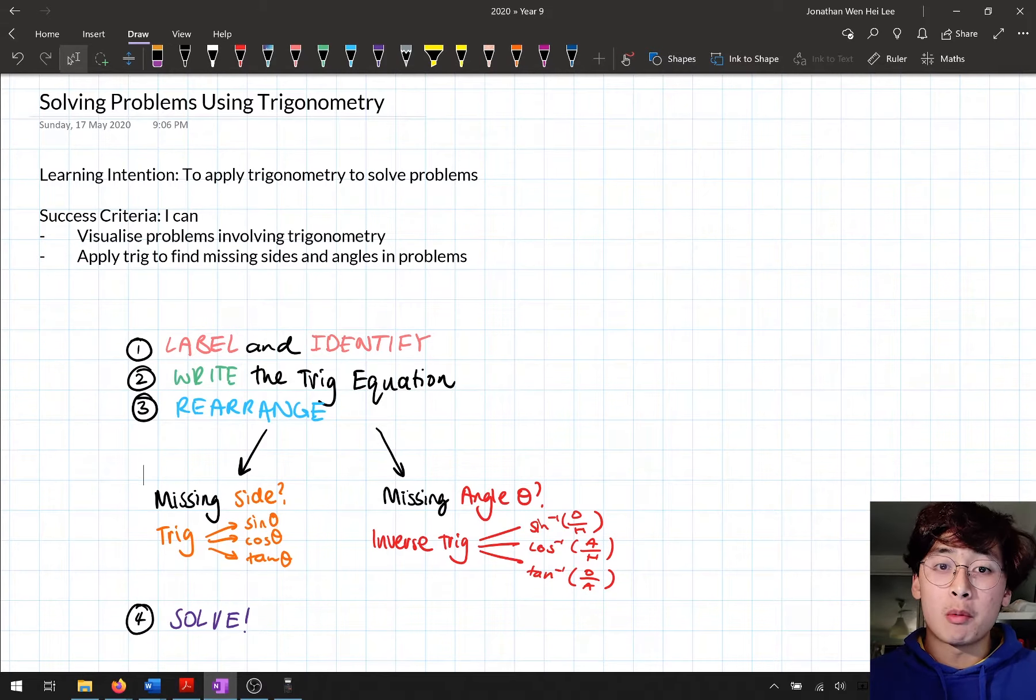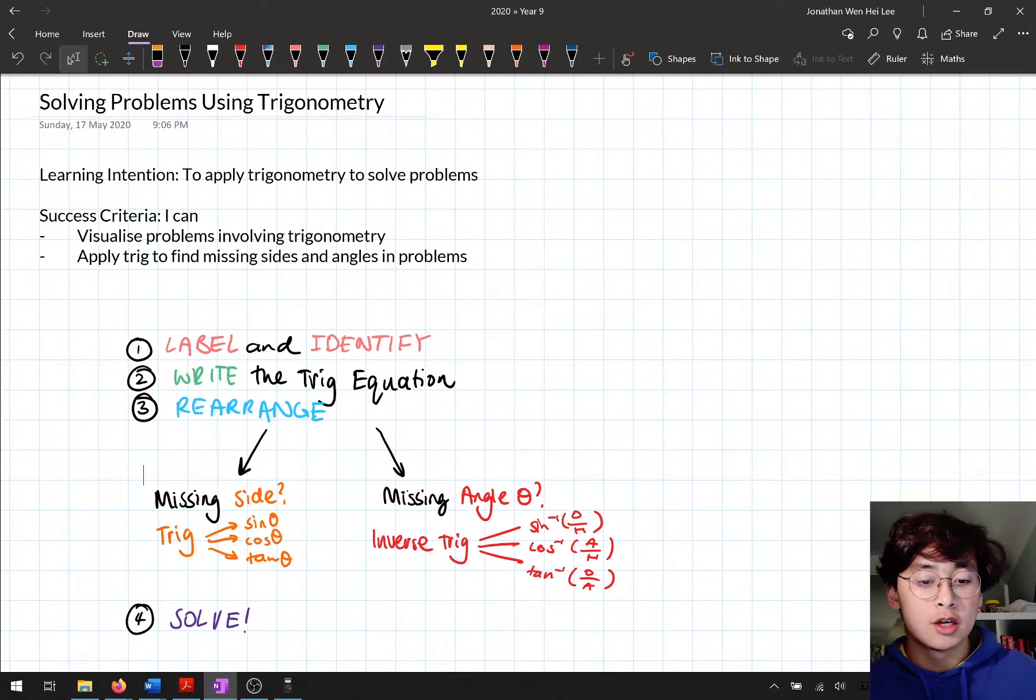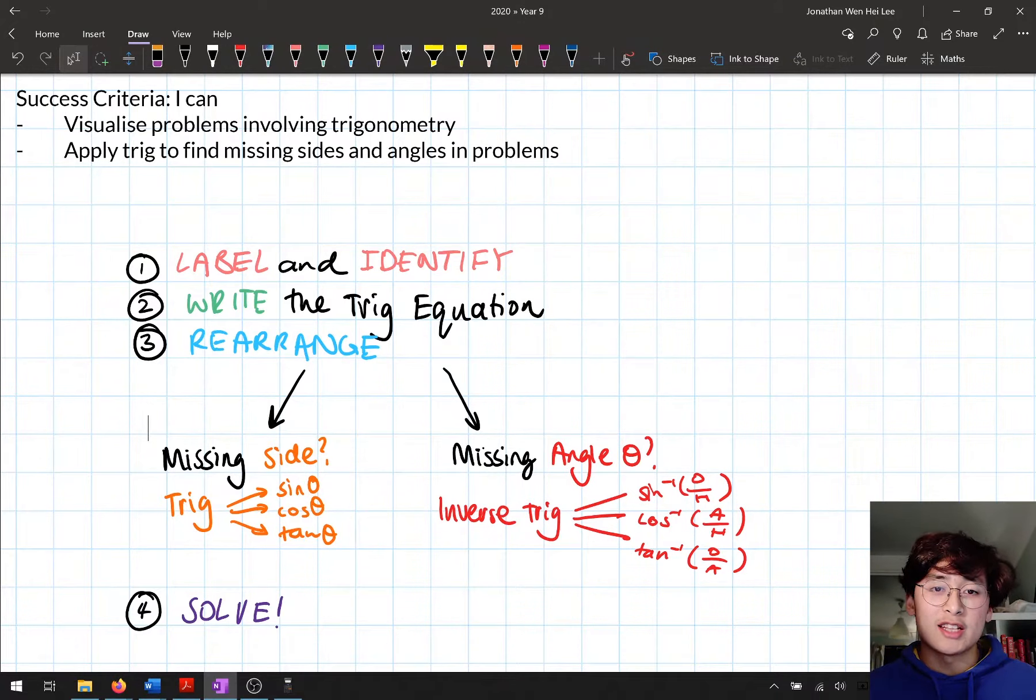Now a quick recap about what we've done over the last couple of lessons. We've been applying these four steps to help us find missing sides and missing angles in right angle triangles using trigonometry. The first step was we labeled and identified our trig ratio. We labeled the three sides of our right angle triangle, then identified what trig ratio we're going to use: sine, cos, or tan.